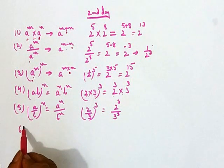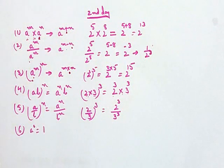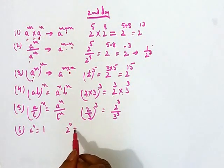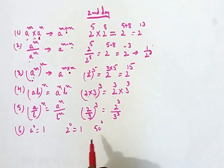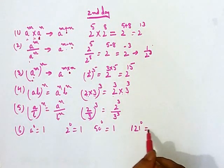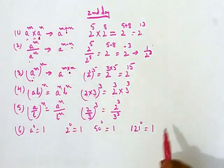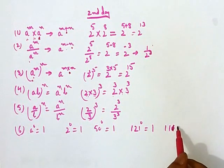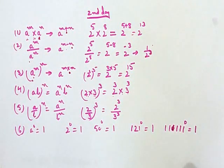One more rule: a to the power 0 has value 1. For example, 2 to the power 0 is 1, 50 to the power 0 is 1, 121 to the power 0 is 1 — any number raised to the power 0 equals 1.